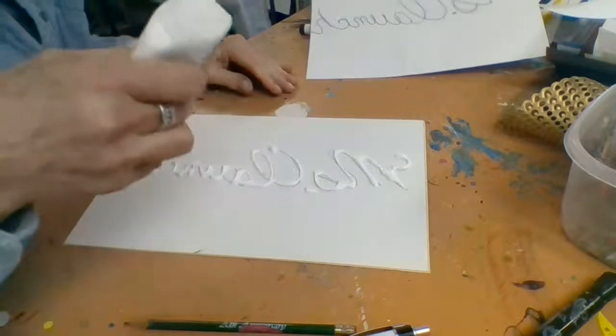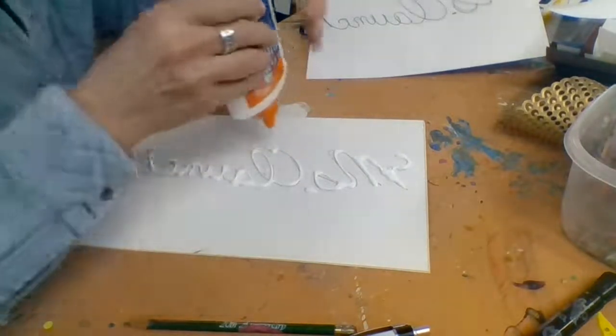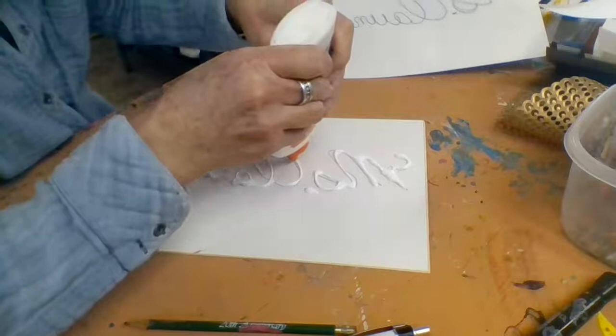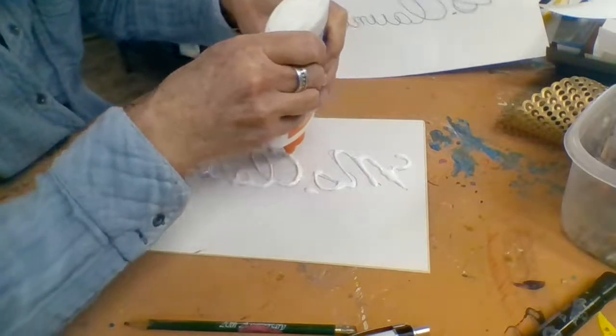So now I'm just going to add to this. If I want, like, the C to be thicker, I'm going to just add, make that a little thicker.